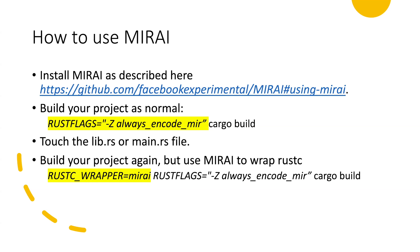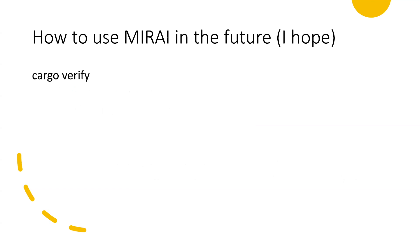Then you'll get — hopefully it doesn't crash, but sometimes it will — some diagnostics, and maybe some of them will be useful. In the future it'll be much nicer if we could just do something like 'cargo verify' and not have to do all that double building and touching and flags. There's really some more work to be done in terms of Rust's support for verification.